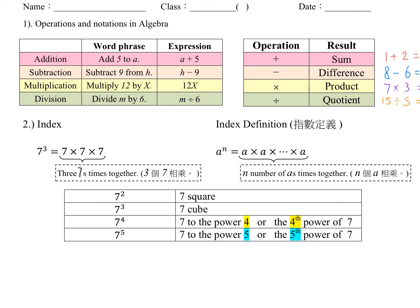On the other hand, if we only have 2 sevens times together, we call it 7 square. And if we have more than 3, we usually say in this way, like 7 to the power 4, or the 4th power of 7. With the same logic, if we have 5 sevens times together, we say 7 to the power 5, or the 5th power of 7.